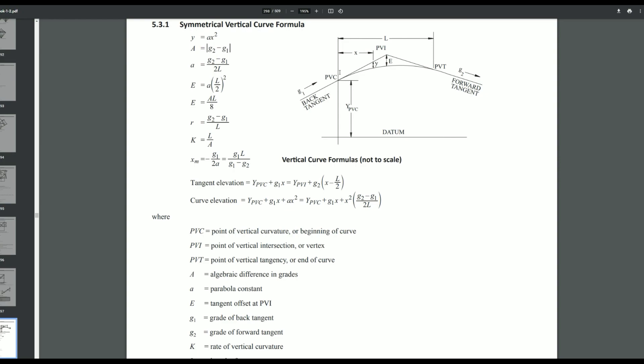X is just the distance from where your curve starts to the point of interest. And a couple more variables here. We covered G1, that's the back tangent slope. G2 is just the forward tangent slope, or the second slope that you'll see. And L is just the length from where your curve starts to where your curve ends.